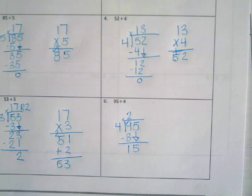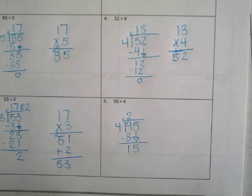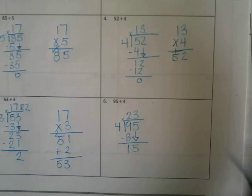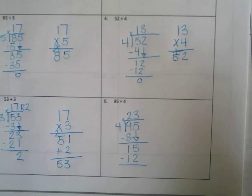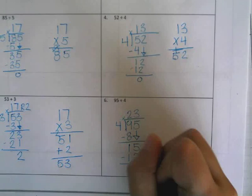How many times can 4 go into 15? 3. Alright. 4 times 3 is? 12. 15 take away 12 is? 3.